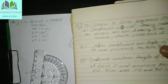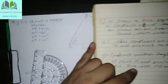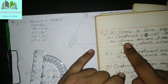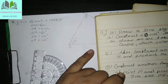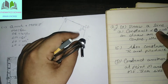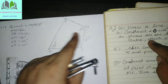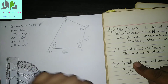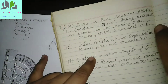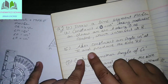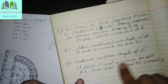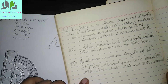Aapne kaise karne hain — ek draw line segment kitne, 105 degree, taking radius 4.5 centimeter, draw an arc. Taking OA as center, O ke upar kya, 5.5 — sorry — 4.5 centimeter R we cut, which intersect. Now also construct angle 105 degree at R and produce the side RE. Construct another angle of 60 degree at point M and produce the side ME. Both sides ME and RE intersect.